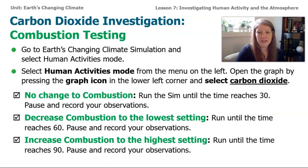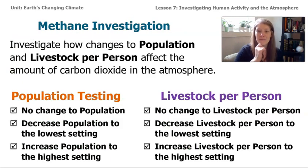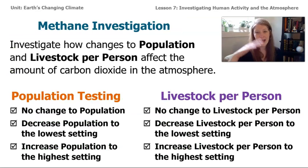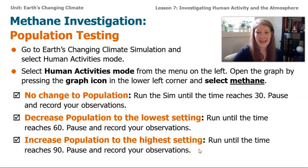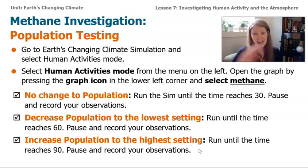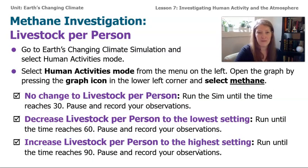After you're done with that, we're going to look at methane, because we know that's the other gas that also affects how energy exits and enters Earth's system. This time we're going to look at population for methane, just like we did for carbon dioxide, but instead of combustion we'll be looking at livestock per person. We'll do it the exact same way: no change, let it run to 30, then decrease to the lowest setting and run to 60, then increase to the very highest setting. We'll do the exact same thing for livestock.